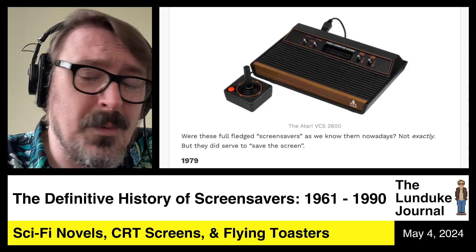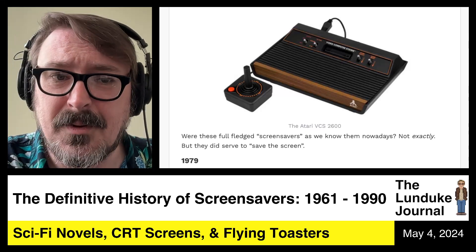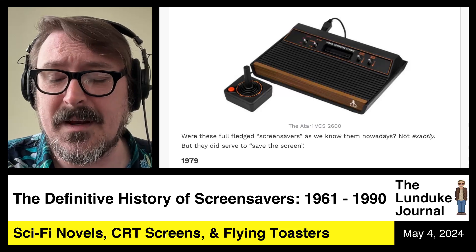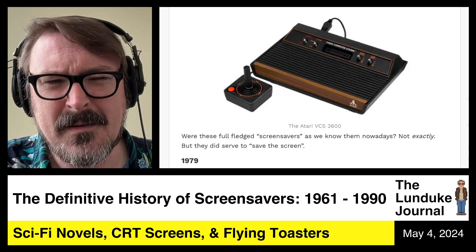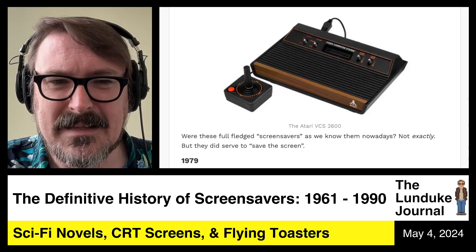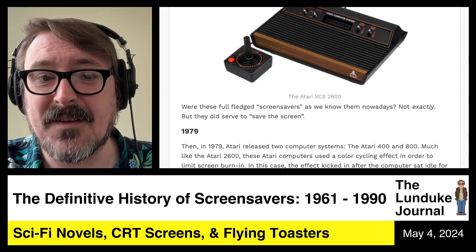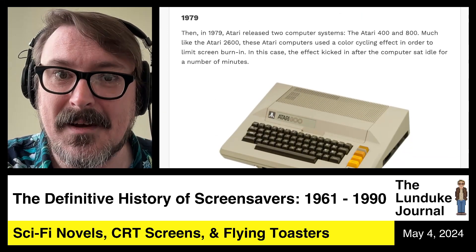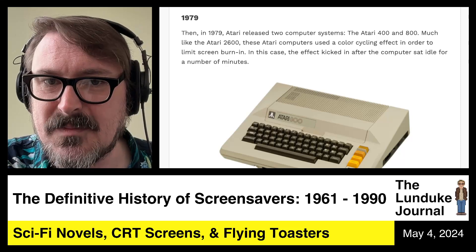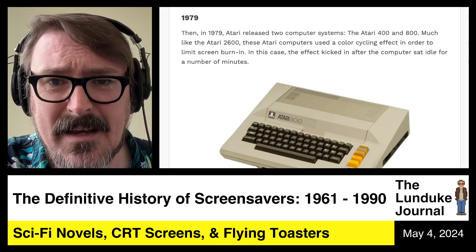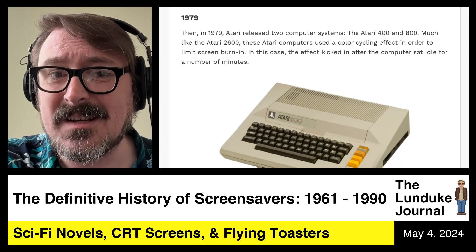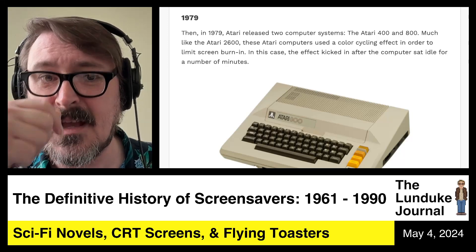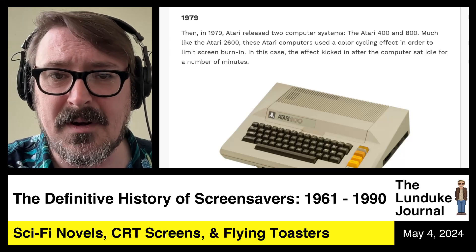It was pretty cool. It wasn't customizable, it didn't black out the screen, it didn't completely prevent screen burn-in — but it did help, and it was pretty close to a screen saver. In 1979, Atari again released two computer systems: the Atari 400 and the Atari 800. Much like the Atari 2600 game console, these Atari computers used a color cycling effect in order to limit screen burn-in.